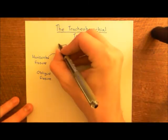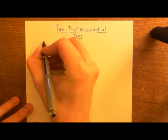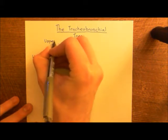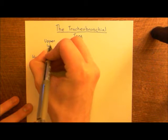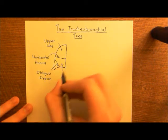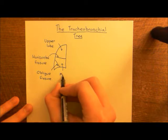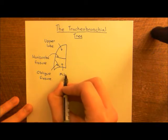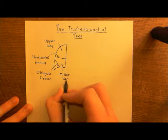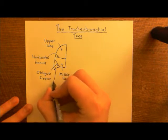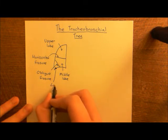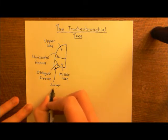You must always specify which lung you are talking about. This lobe up here is the upper lobe of the right lung. This here is the middle lobe of the right lung. And then finally, underneath the oblique fissure down here, this is the lower lobe of the right lung.